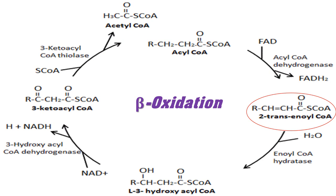Enoyl-CoA hydratase removes the double bond just formed by adding a hydroxyl group to the third carbon from the CoA group and a hydrogen to the second carbon from the CoA group. Hydroxyacyl-CoA dehydrogenase then removes the hydrogen from the hydroxyl group, producing NADH. Finally, ketoacyl-CoA thiolase attaches a CoA group to the third carbon, yielding two molecules: acetyl-CoA and an acyl-CoA that is two carbons shorter than the original.